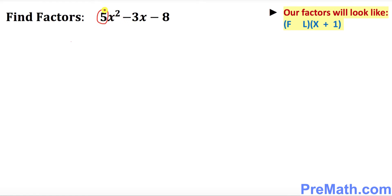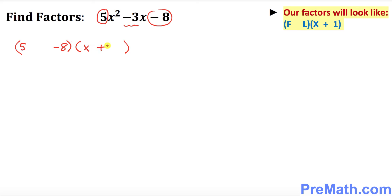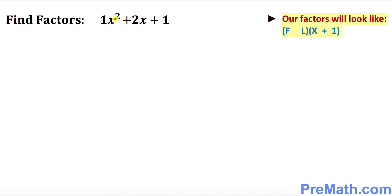Let's look at this example. The first number is 5, the last number is negative 8. When you add them you get negative 3, which means we're going to come up with these factors. First number is 5, last one is negative 8, and always in the second parentheses x plus 1. The next step is you put x next to this one, and these are your factors.